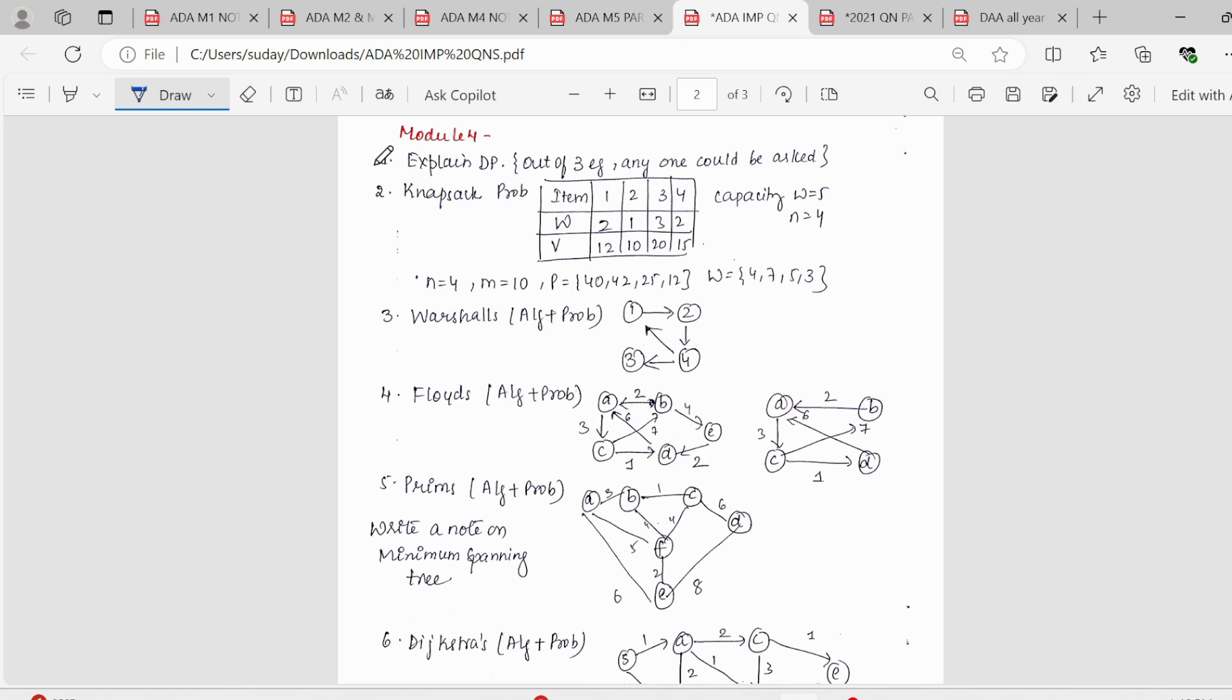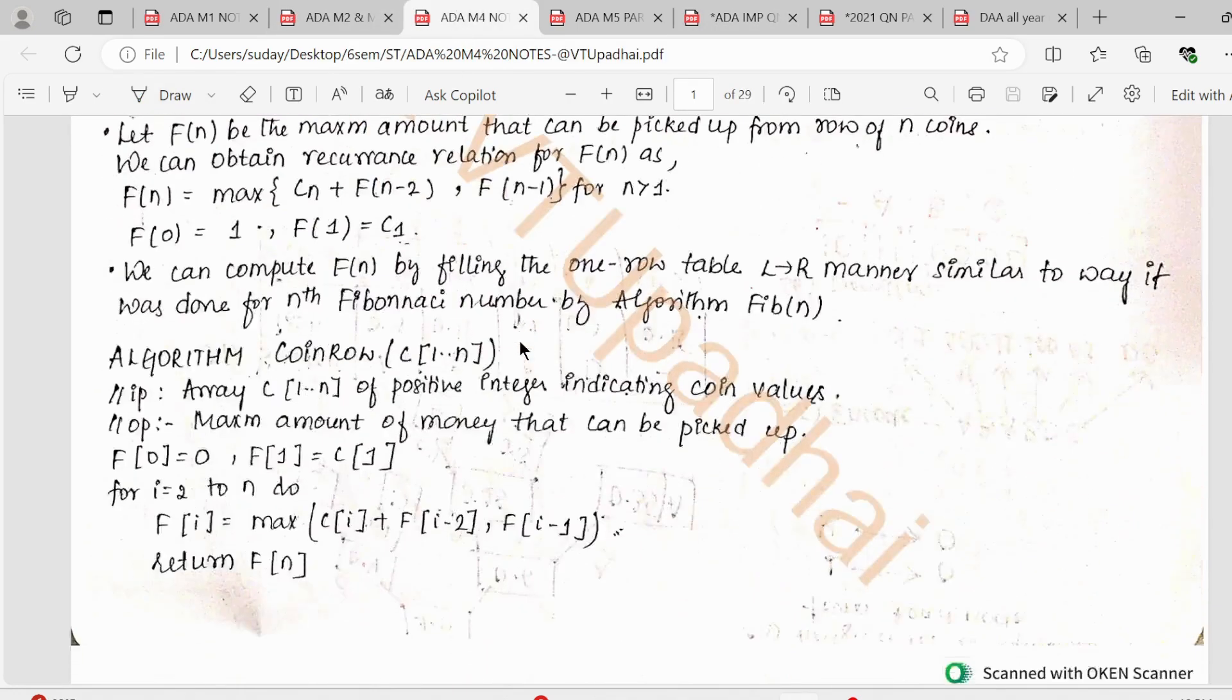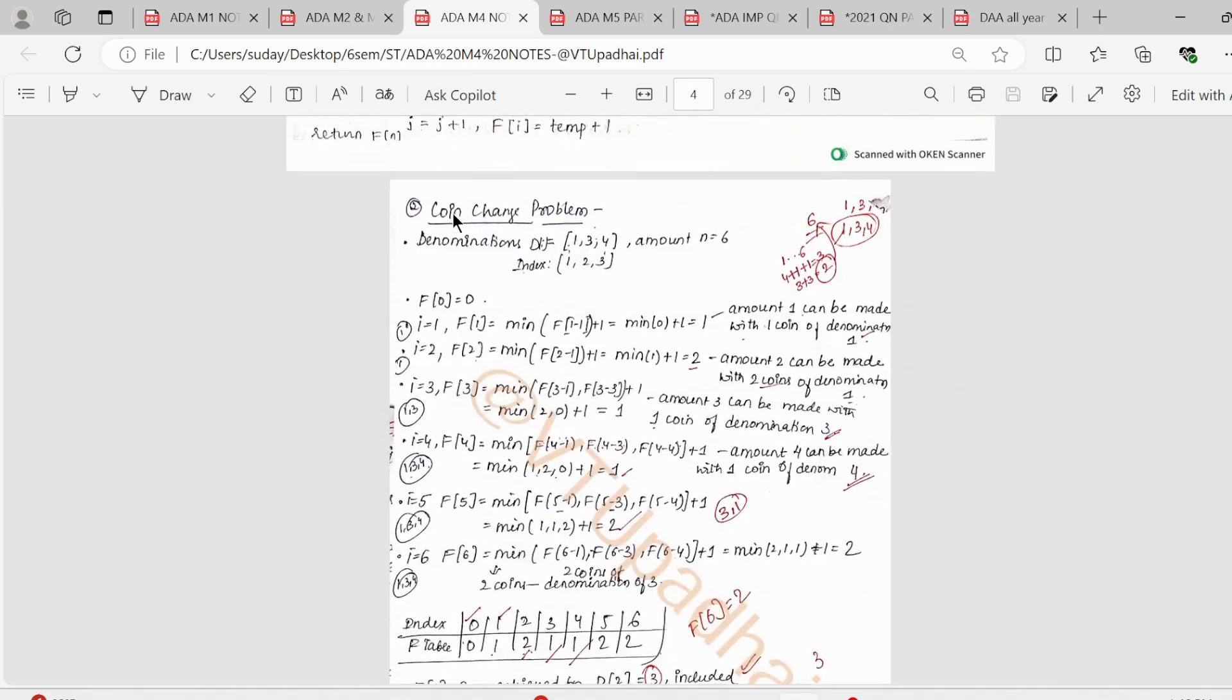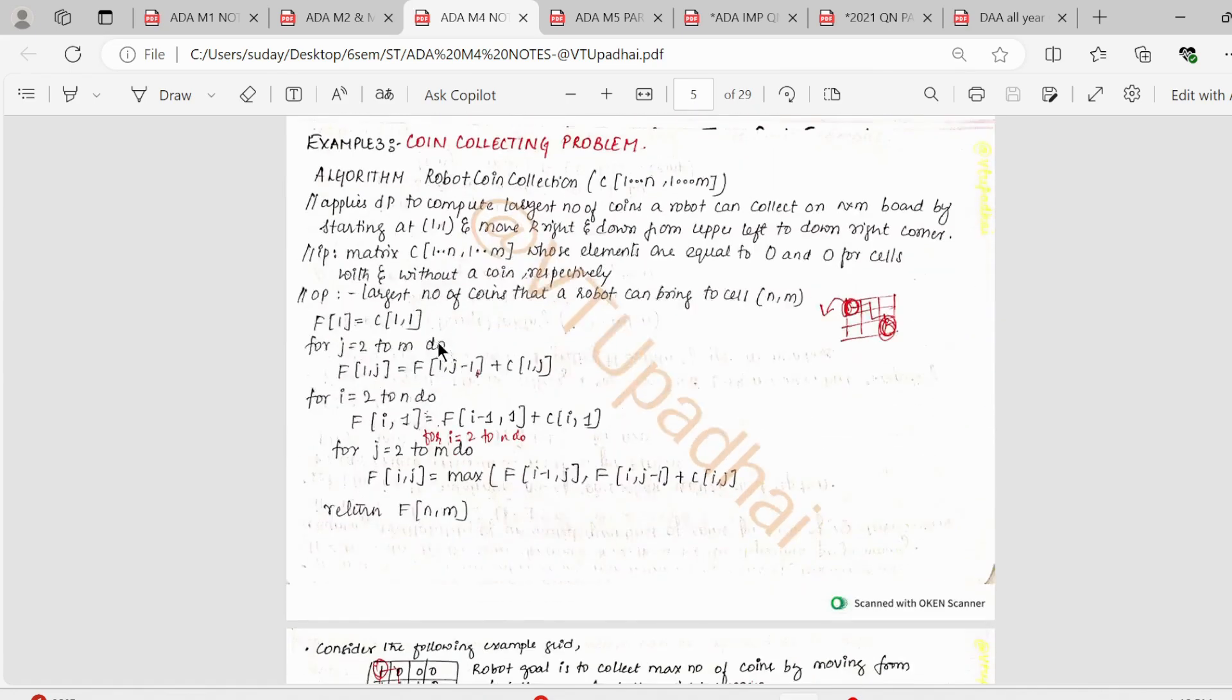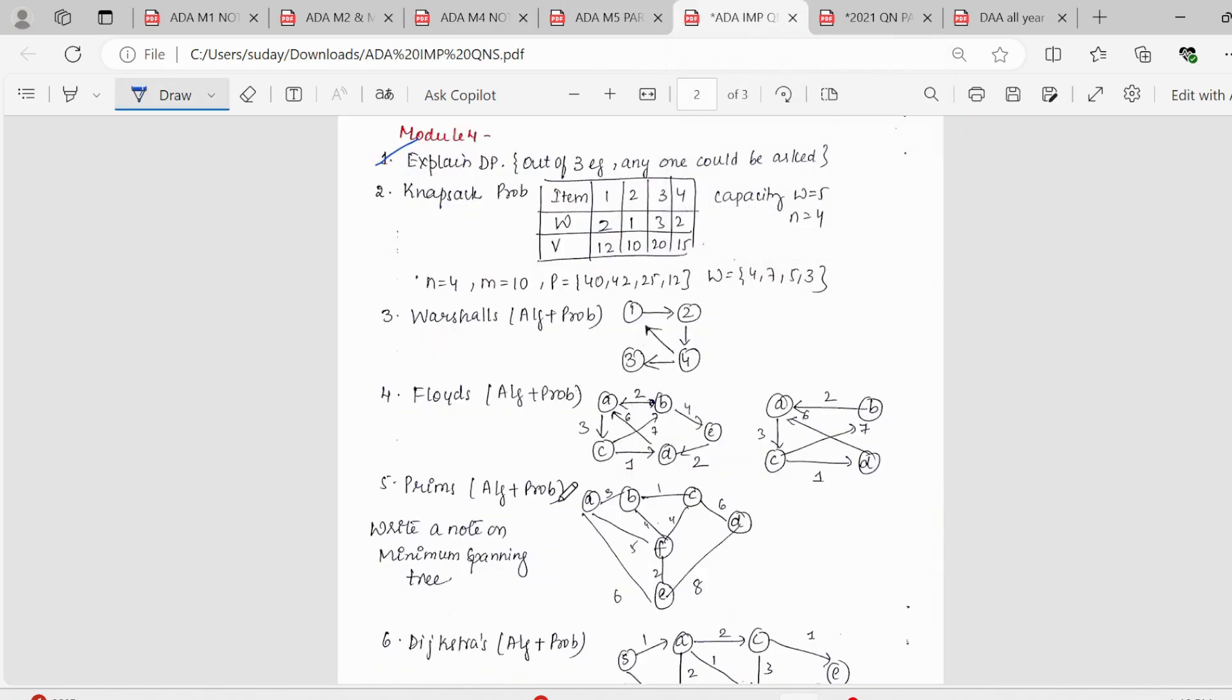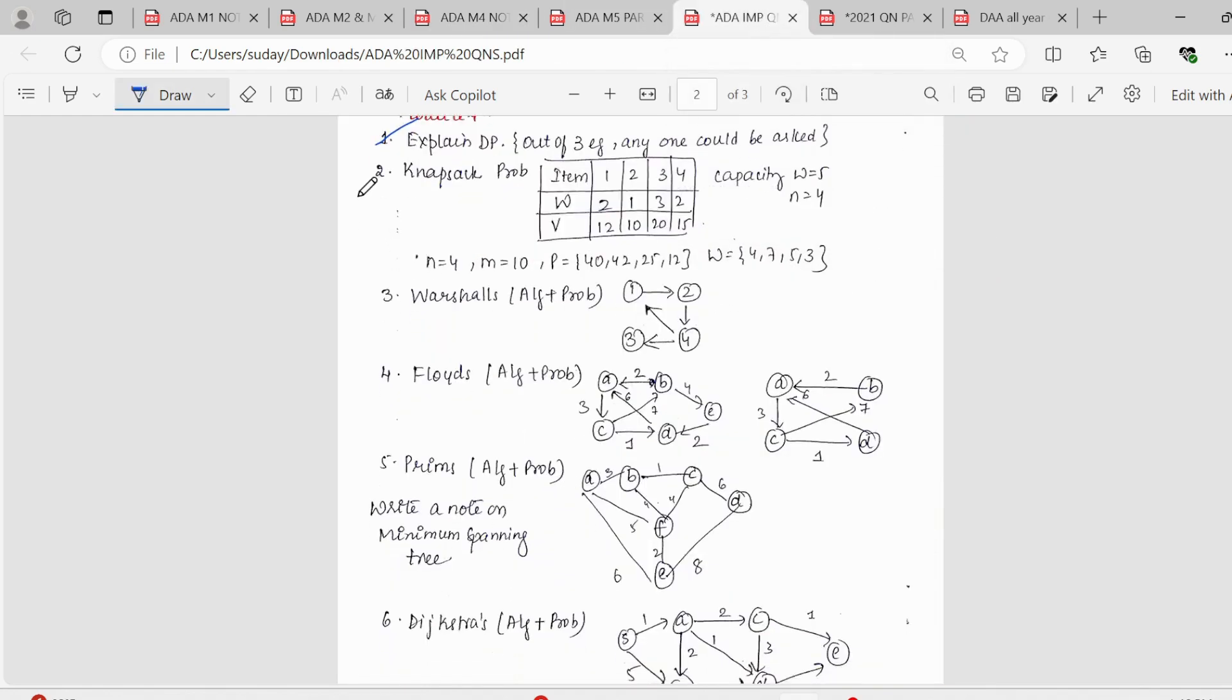Moving on to the fourth module, we have the DP, introduction to dynamic programming. And out of that, three examples are there. So in those three examples, anyone could be asked. First one is the coin row problem, or we have the change making problem, or the robot coin collecting problem. So out of these three, one could be asked. Next we have the knapsack problem. So again, knapsack problem, this is a standard question which is usually asked. So there are two questions. So first one is this, and the second one is this.